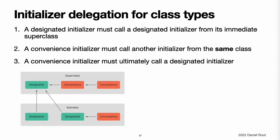Initializer delegation for class types. To simplify the relationships between designated and convenience initializers, Swift applies the following three rules for delegation calls between initializers. Rule 1: a designated initializer must call a designated initializer from its immediate superclass. Rule 2: a convenience initializer must call another initializer from the same class. Rule 3: a convenience initializer must ultimately call a designated initializer. A simple way to remember this is: designated initializers must always delegate up; convenience initializers must always delegate across.